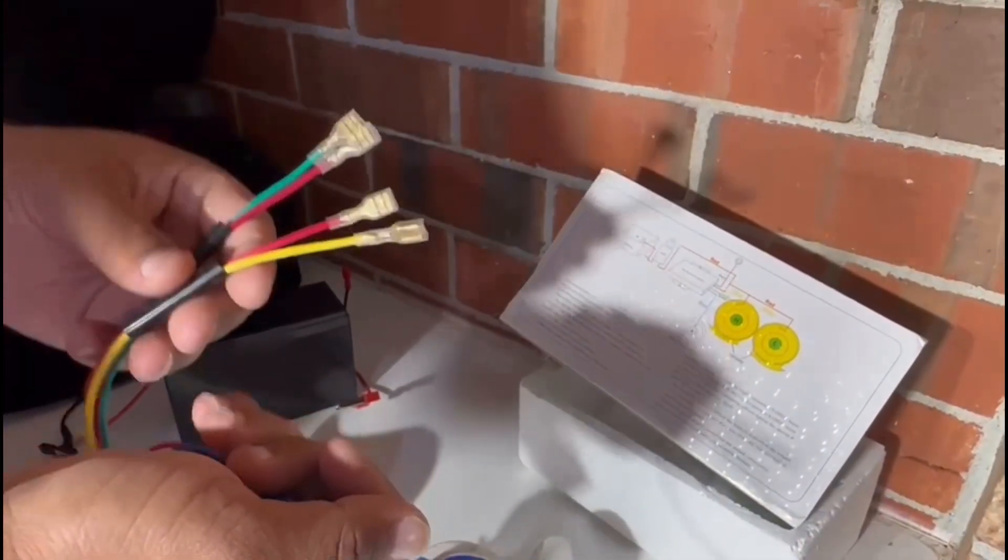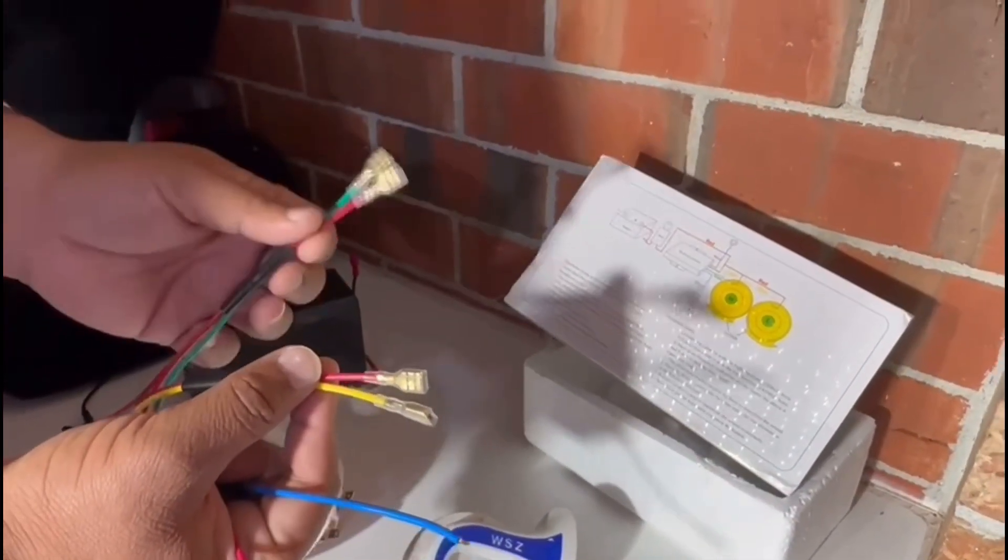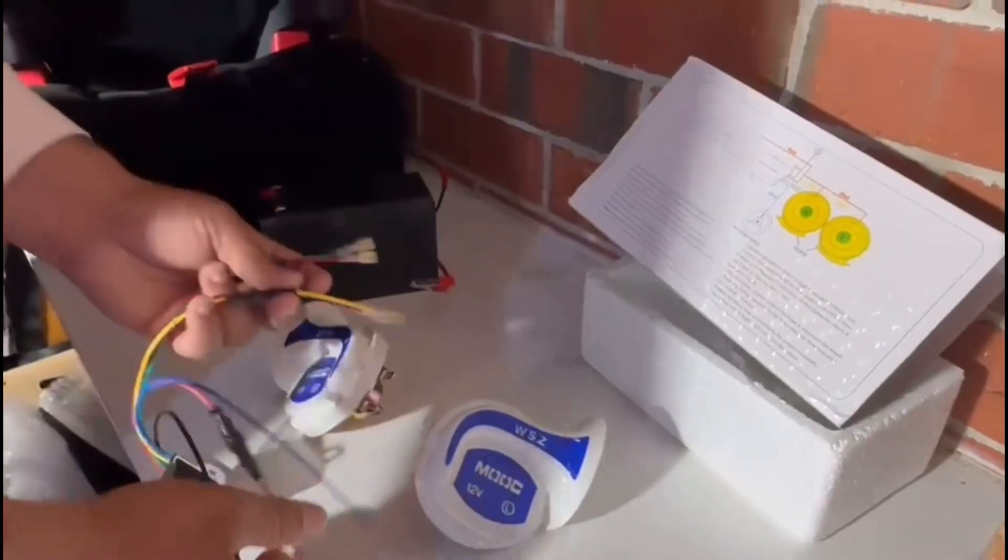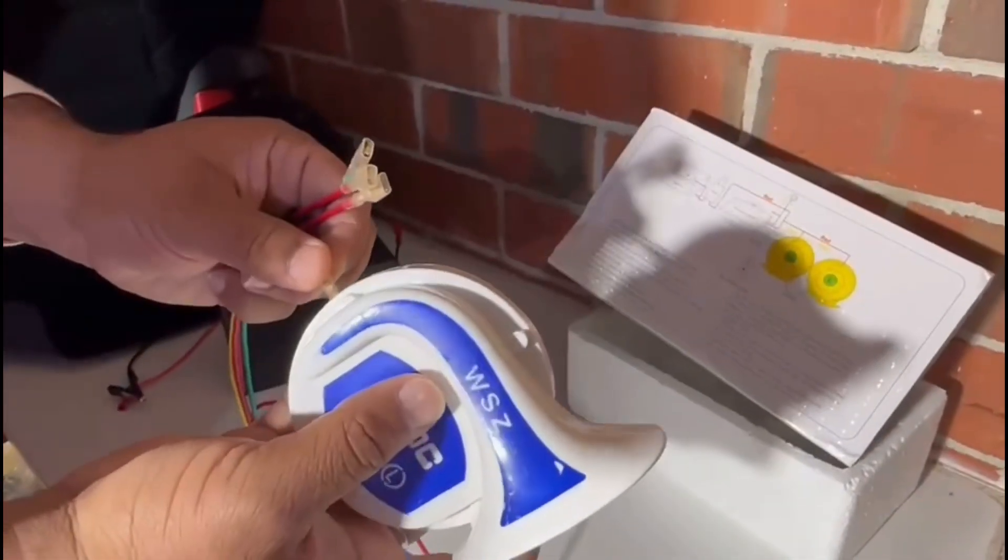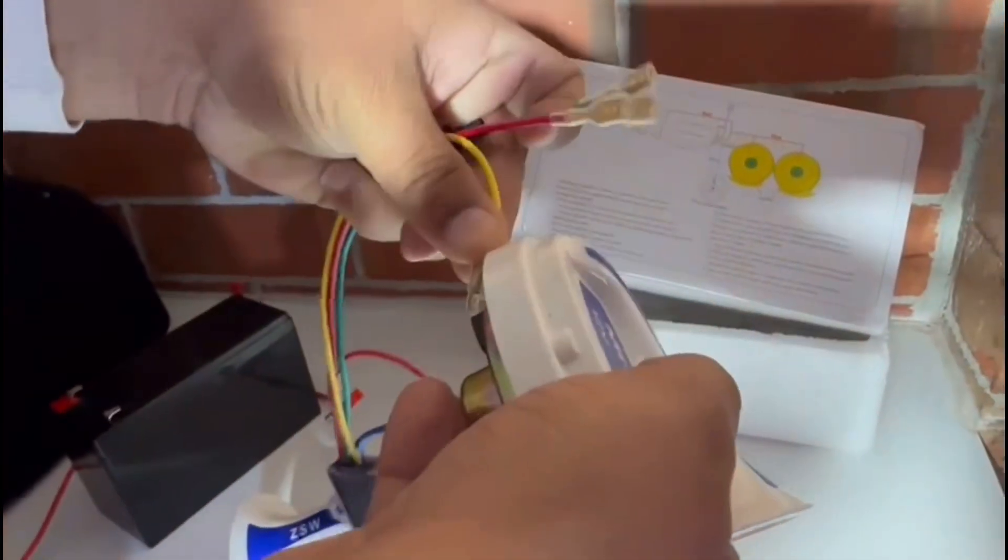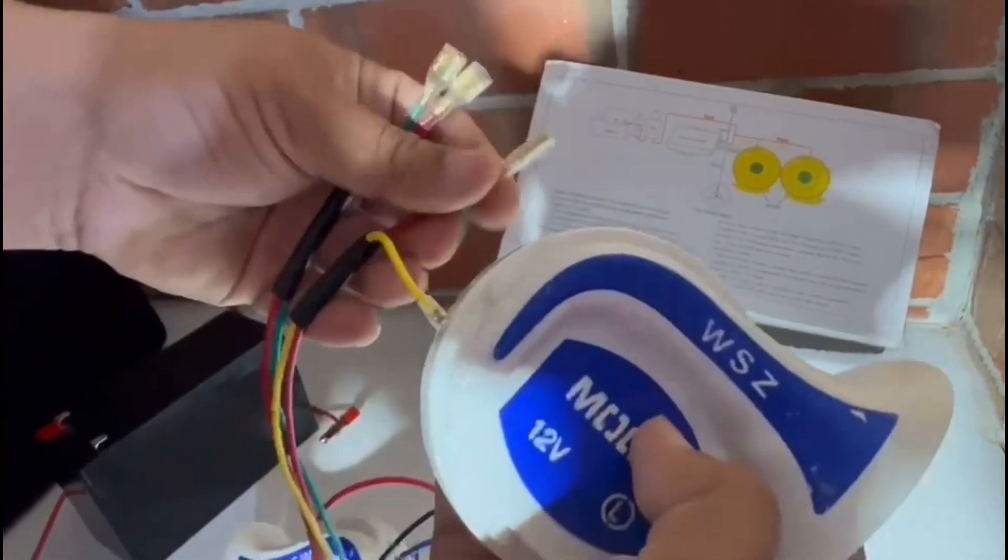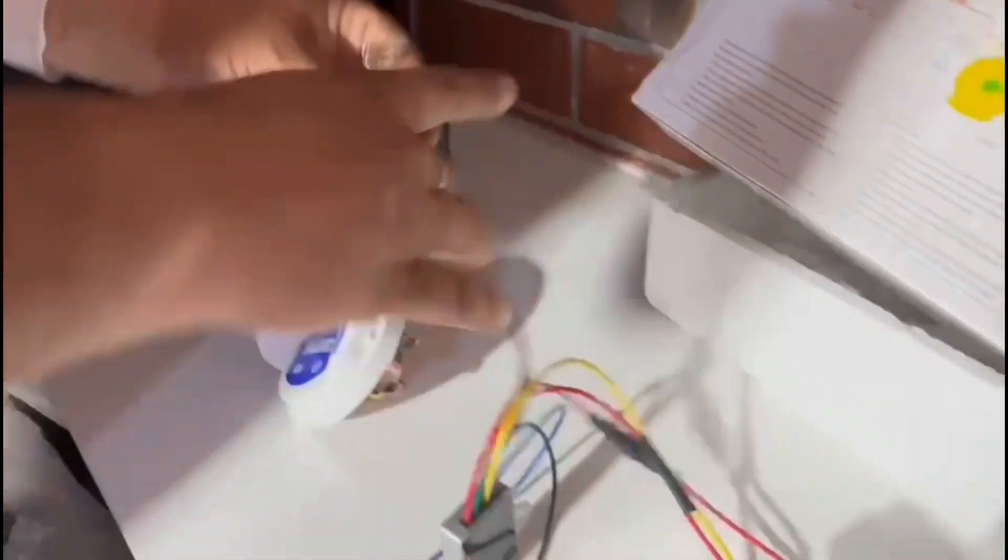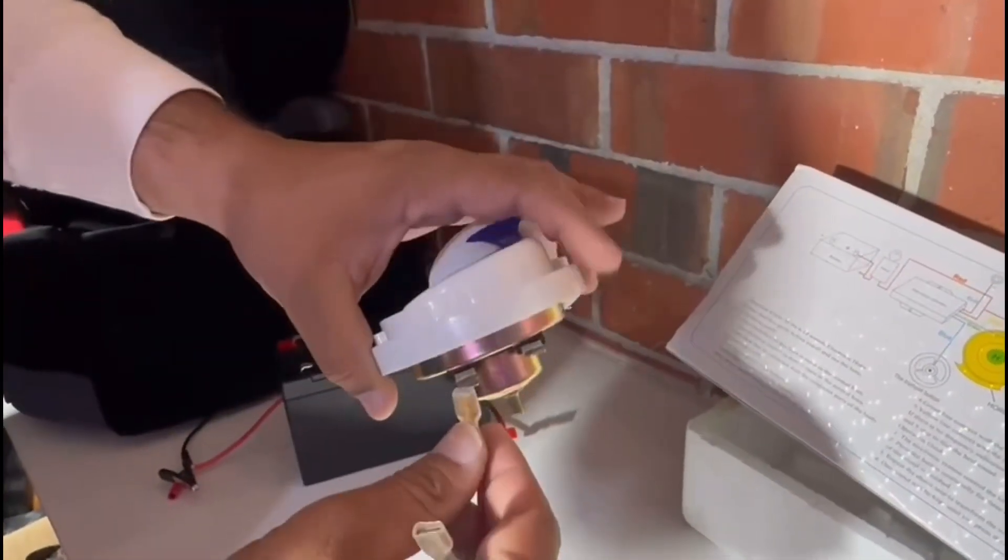The green one and the red one go to the high horn, and the red one and yellow one go to the low horn. Let me repeat: red and yellow go to the low horn. Just clip it like this. It's got a normal terminal, very easy to click. And the green and red one go to the high horn that says H on this one.